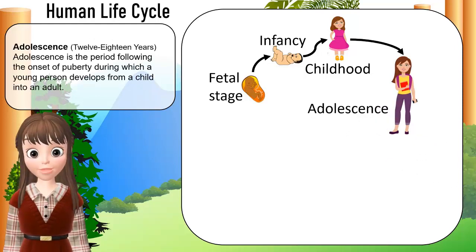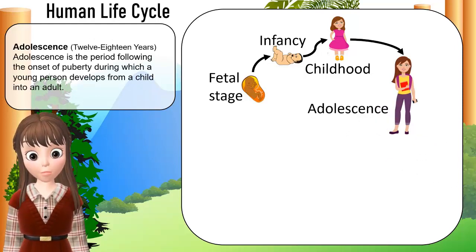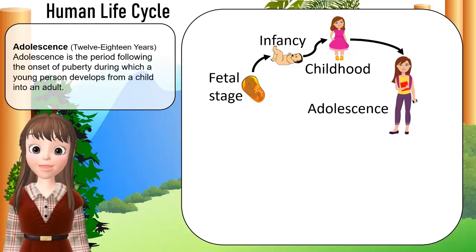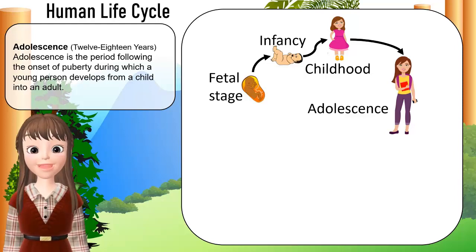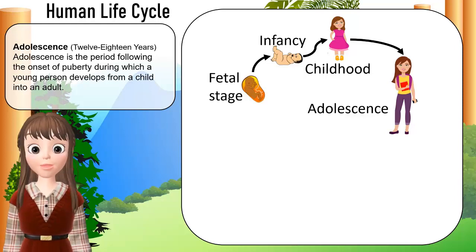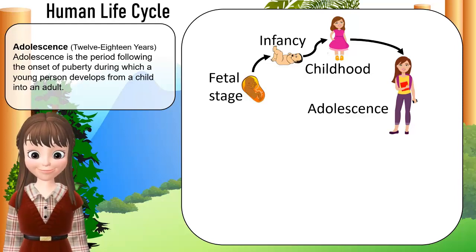Adolescence, 12 to 18 years old, is the period following the onset of puberty during which a young person develops from a child into an adult.